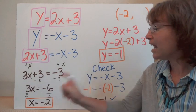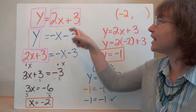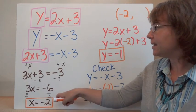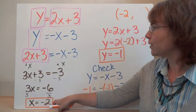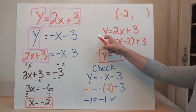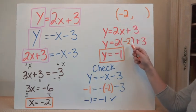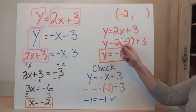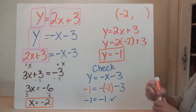x is equal to negative 2. Now we need to figure out what the y coordinate is. So we're going to take this x and substitute it into either one of these equations to find out what y is, because x has to be the same for both. So we're going to take that negative 2 and I chose the first equation. So instead of x, I'm going to put in a negative 2. y equals 2 times negative 2 plus 3. That gives us y equals negative 4 plus 3, which is y equals negative 1. Now I have my y coordinate.